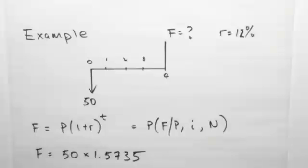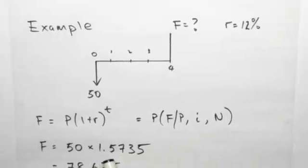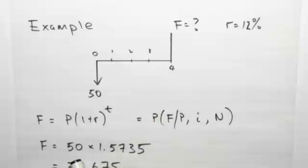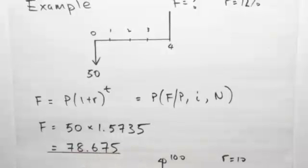We find that for this, the factor is 1.5735. So we simply take the original amount, the principal of the present value, times by 1.5735, and we get that the $50 now would be worth $78.67 and 5 cents in the future.